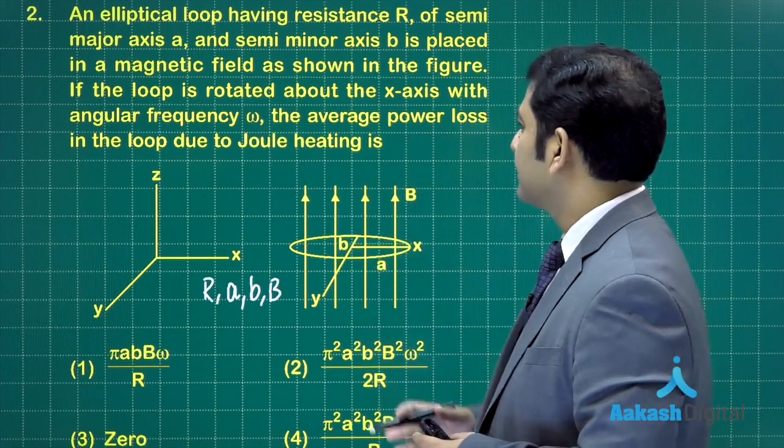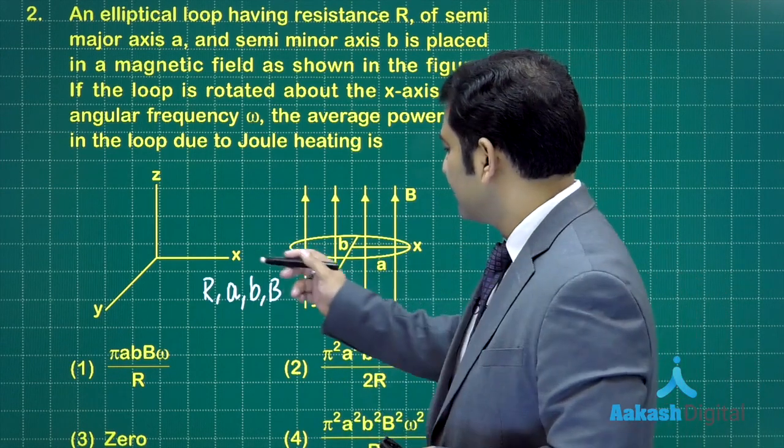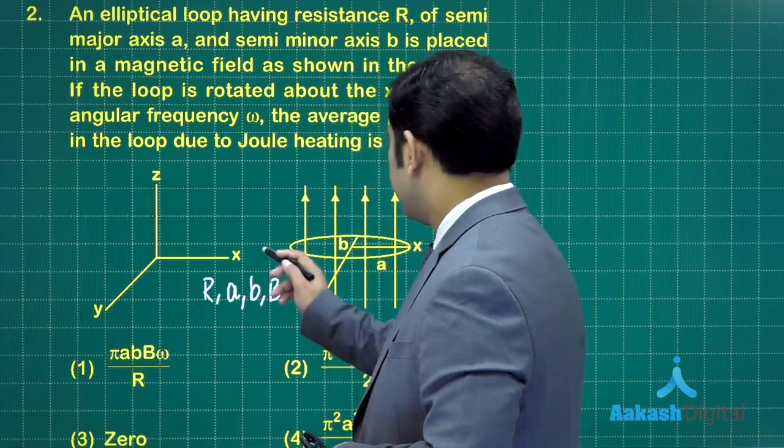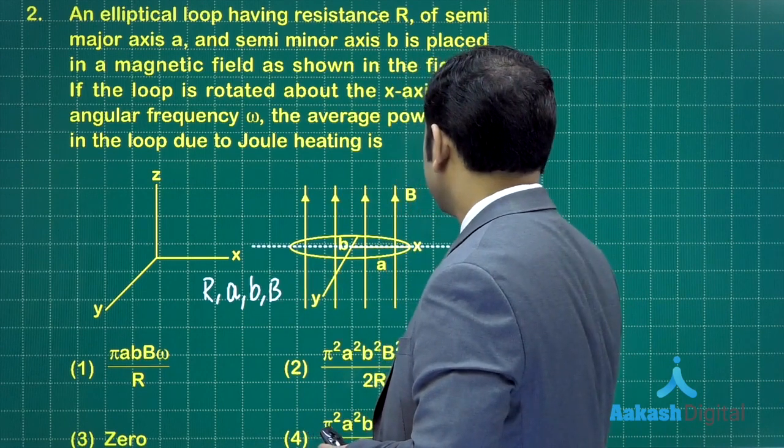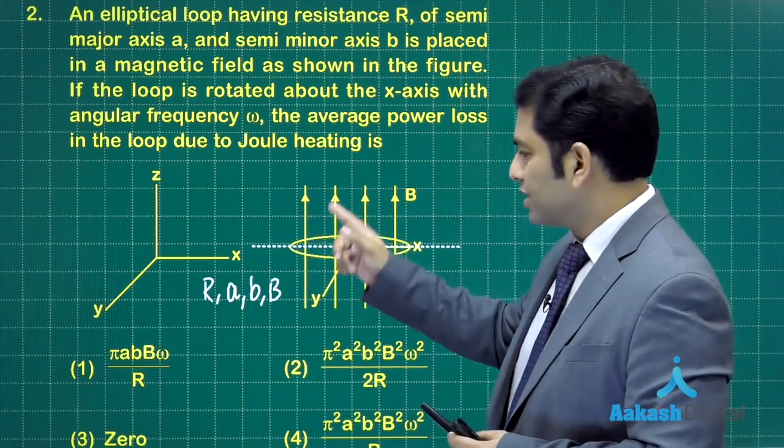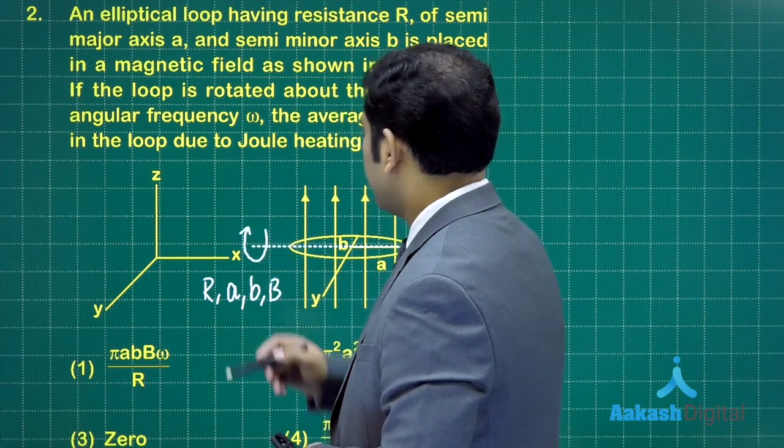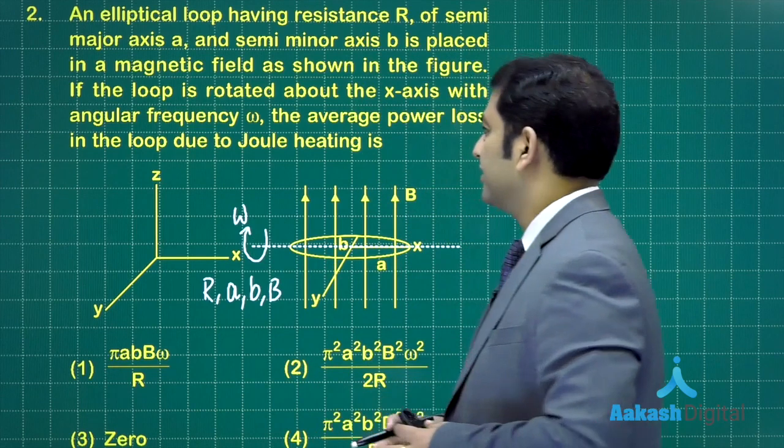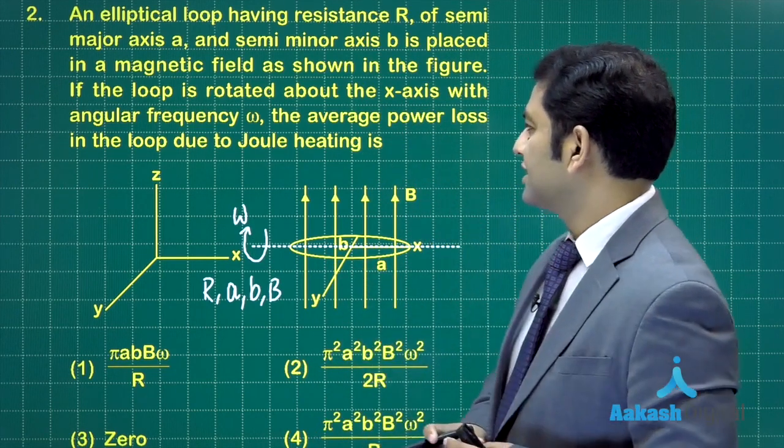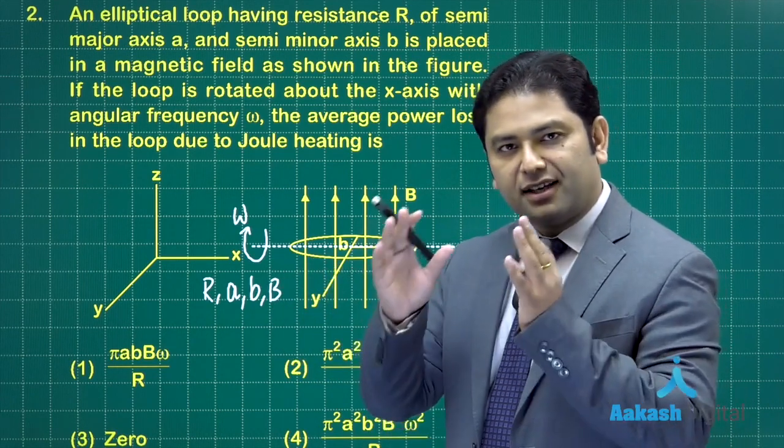Now what is the question? It says the loop is rotated about the x-axis. So look, the x-axis would be the diameter, and let's try to see that as well. If I talk about the diameter, here is that particular diameter, so that means this ring rotates in this given way. Rotating about this particular diameter. So here it goes, and that angular velocity omega has been given. Now what we need to say is that the average power loss in the loop due to the joule heating.